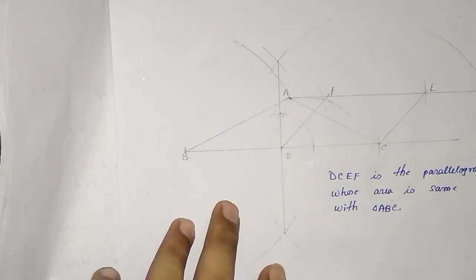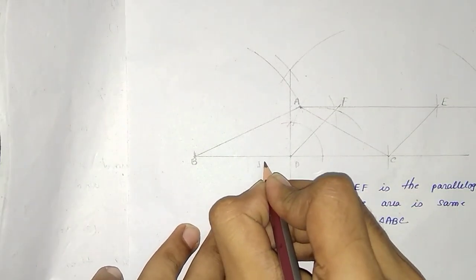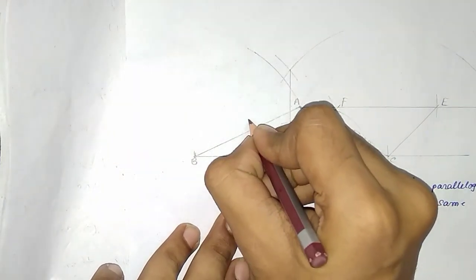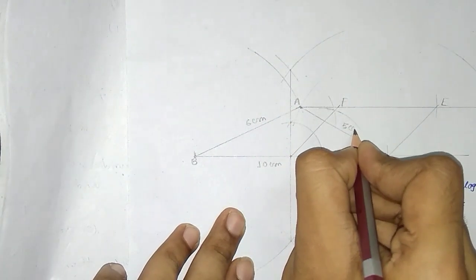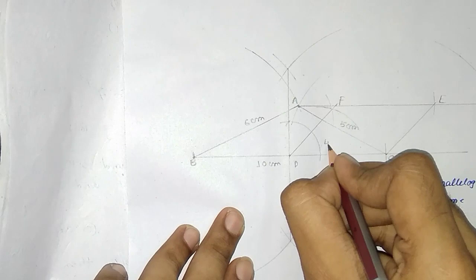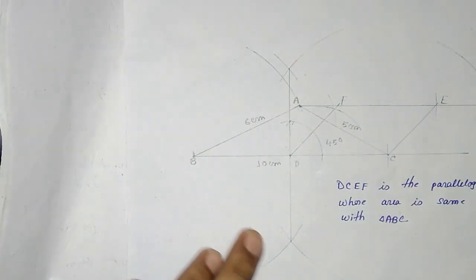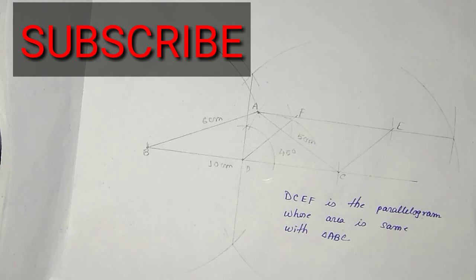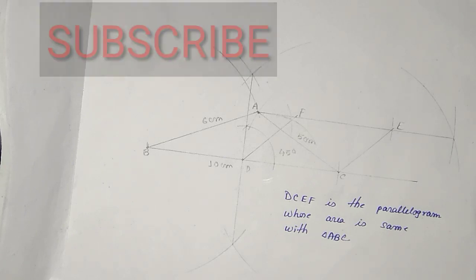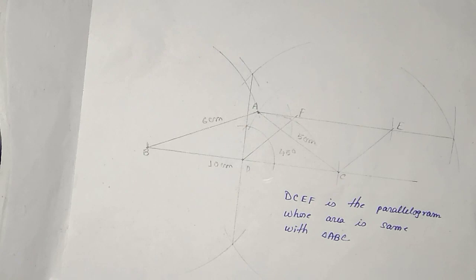You can see the measurements: this is 10 centimeters, this is 6 centimeters, this is 5 centimeters, and this is the 45-degree angle. So this was the complete solution. I hope it was helpful for you. Please keep supporting me, share the video with your friends, and subscribe to my channel. Thank you for watching.